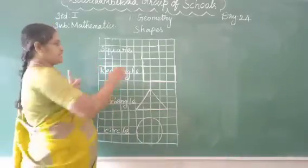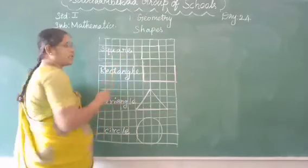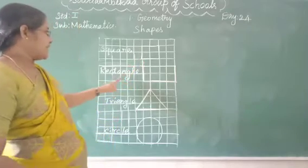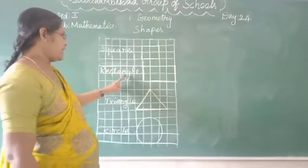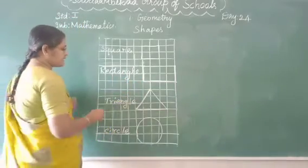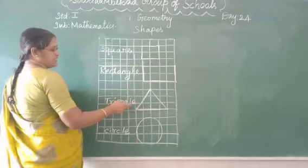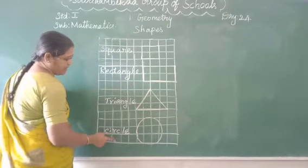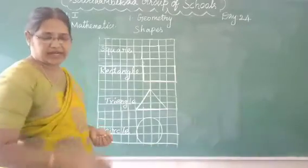Spell and write. First one — square: Q, U, A, R, E. Square. Okay. Next — rectangle: R, E, C, T, A, N, G, L, E. Rectangle. Next — triangle: T, R, I, A, N, G, L, E. Triangle. Circle — C, I, R, C, L, E. Circle. Okay. Spell and write.